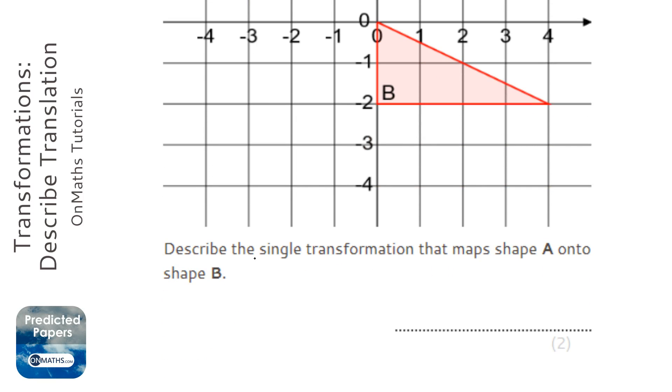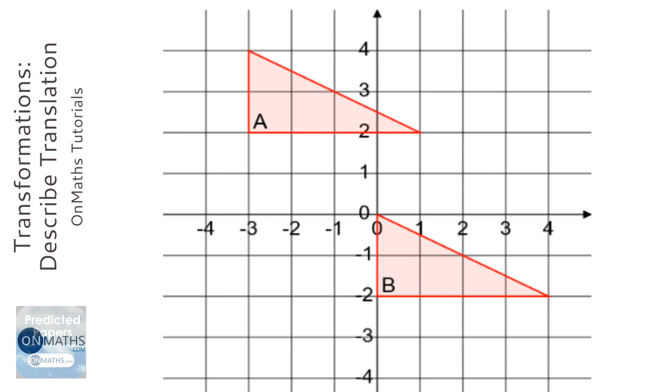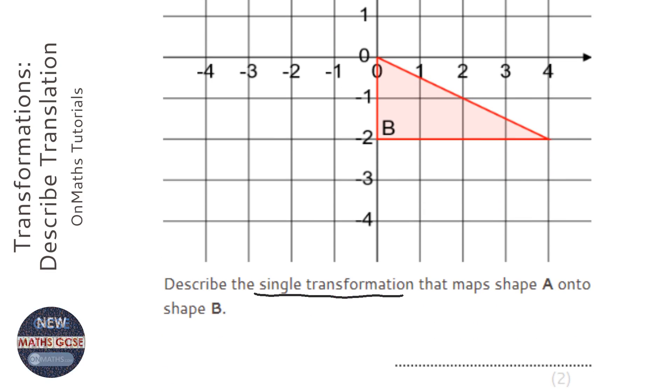We're asked for the single transformation that maps shape A onto B. So I'm starting at A going to B, and I first of all need to figure out which transformation I'm looking at. Well, it's not an enlargement because it hasn't grown or shrunk, it's the same size. It's not a rotation or reflection because it's the same way around, it's exactly the same shape. All that's happened is it's moved, and that means it's going to be a translation.